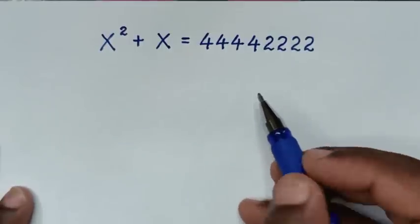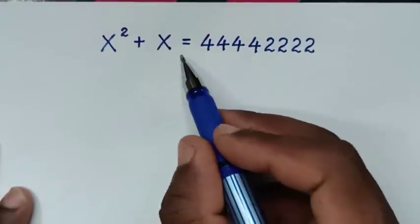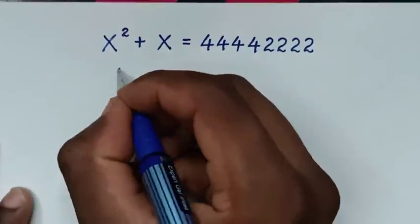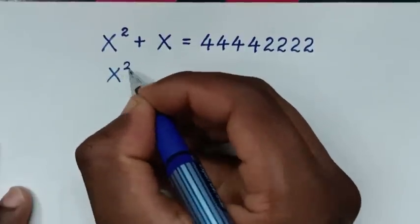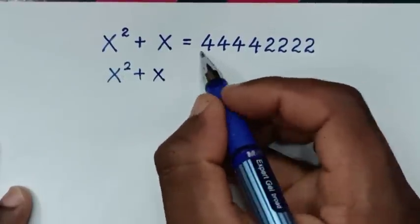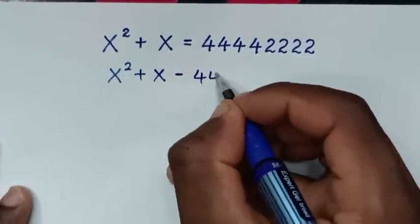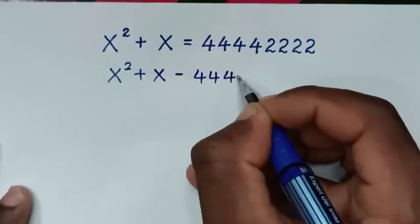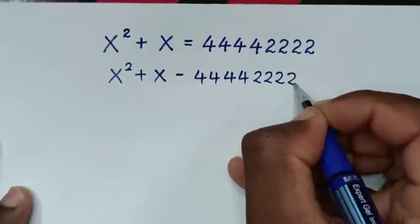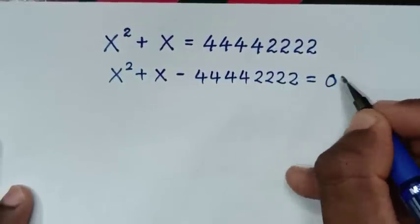Now in the first step we'll take this long number to the left side, so it will be x squared plus x minus 44442222 is equal to 0.